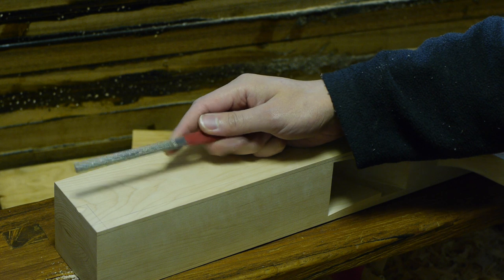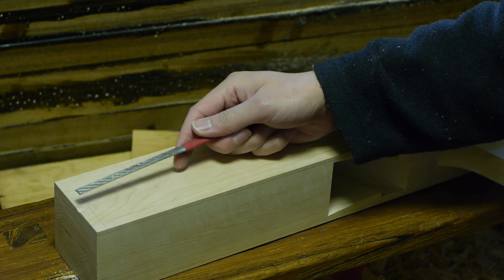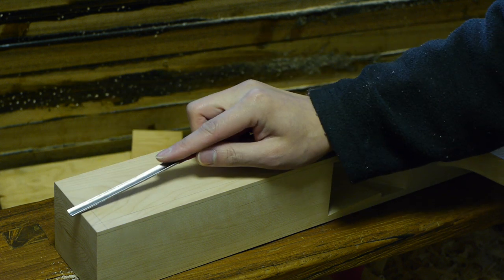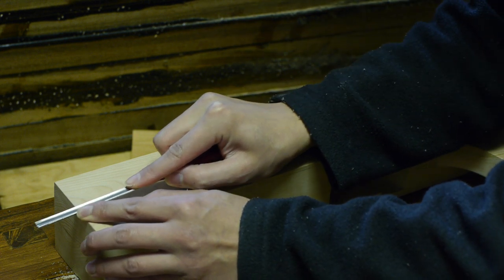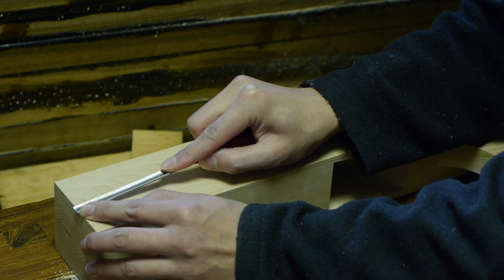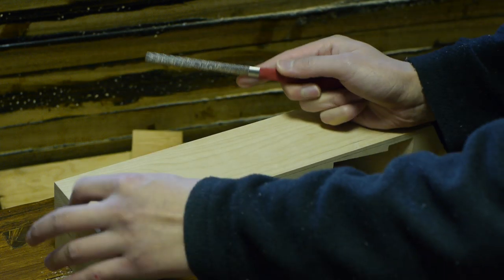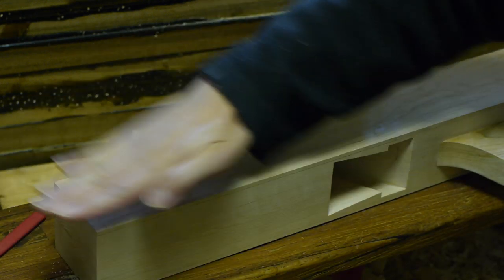But once you've got that marked out, you want to take a half round file, rasp, or whatever, or you can use a gouge. And you basically just want to kind of take this little scallop out of the end. So you create a kind of dip like that.